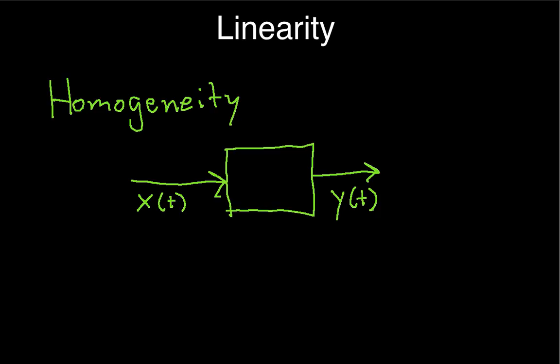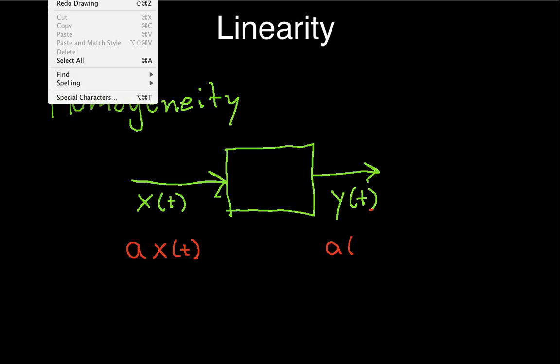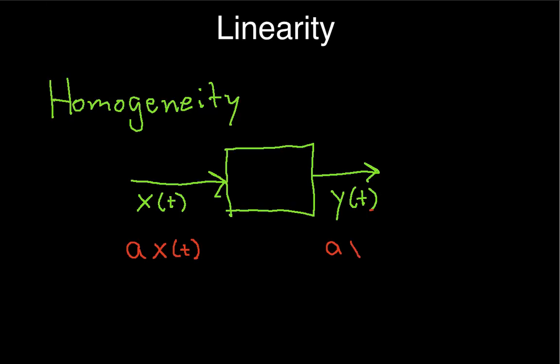So a homogeneous system, or a system that is homogeneous has the following property. If instead of x of t going in, I put some constant a, it's a real number, times x of t going in. If I get out a times y of t, then the system is homogeneous.